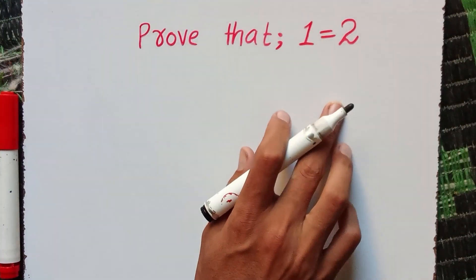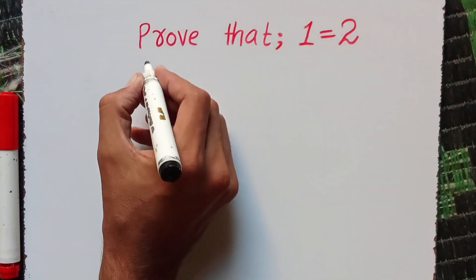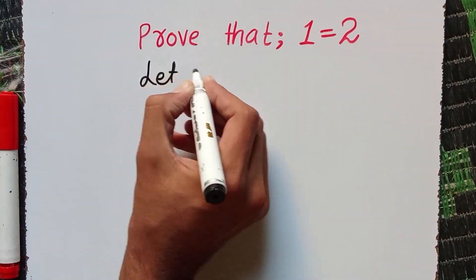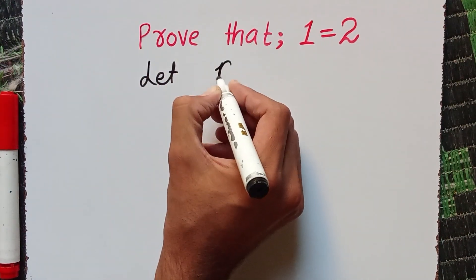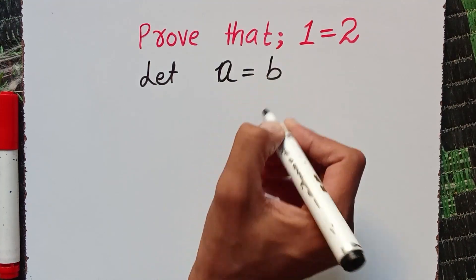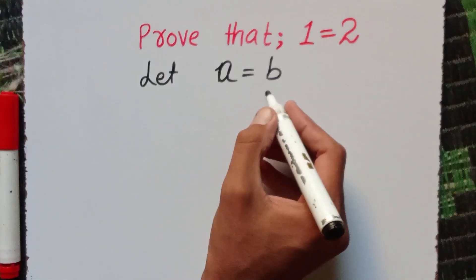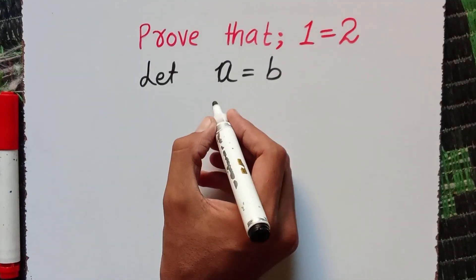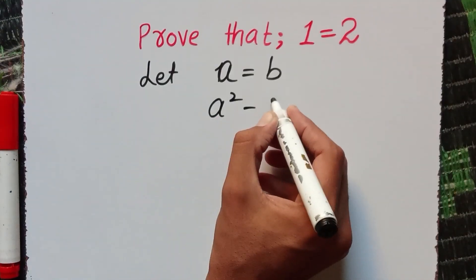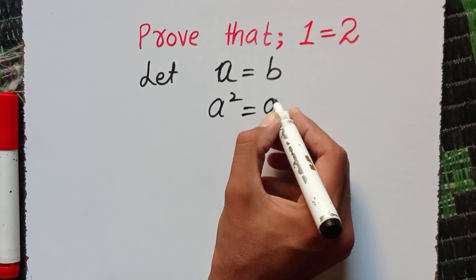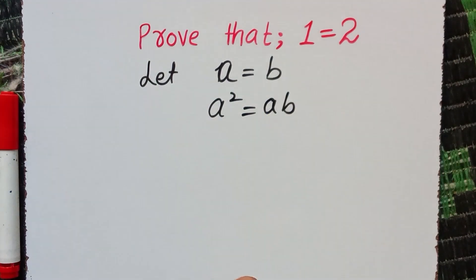So how can we prove that 1 equals 2? Let's suppose that a is equal to b. Now I can multiply a to both sides, so it becomes a squared equals a b.